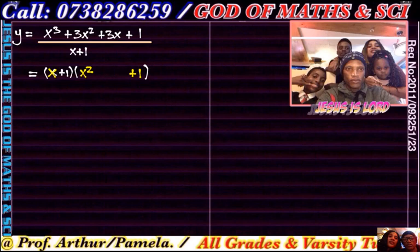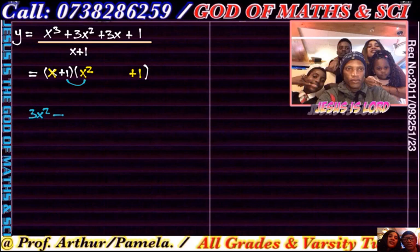To get the middle term, look for the x with power 2, which is 3x squared. Write it as 3x squared, then minus the product of the two neighboring terms — x squared — so you're left with 2x squared. When you put it in the factored form, you write it as plus 2, since you already have the x squared there. So you've factorized the cubic.